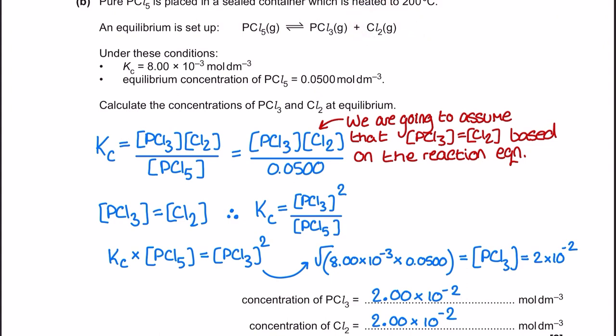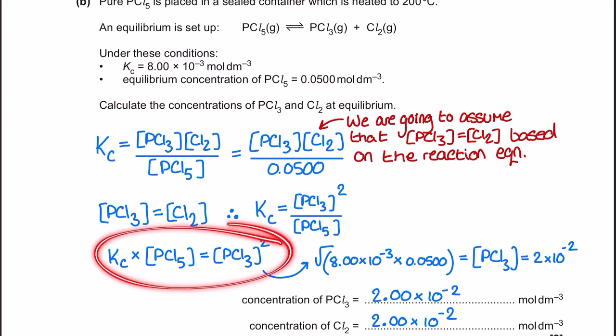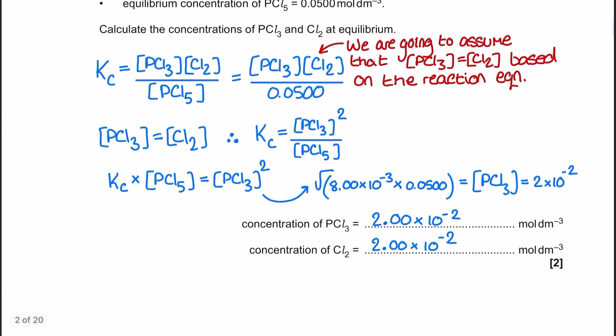Just like with Ka, when I write out the expression the numerator gets simplified to one of the quantities squared. Then I rearrange the expression for Kc to make that concentration the subject and take the square root, giving a PCl3 value of 2 × 10⁻². I then quote this as the same value for the Cl2. It's very similar to the Ka approach when you're calculating the pH of a weak acid.